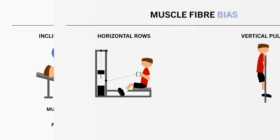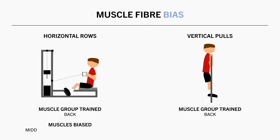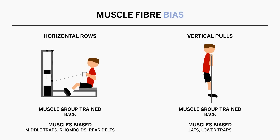Another example would be the back. Horizontal rows and vertical pulls both train the back muscles. Although horizontal rows usually bias the upper back muscles like the middle traps, rhomboids, and rear delts, vertical pulls are better to bias the lats. This is an example of biasing different muscles within the same muscle group.